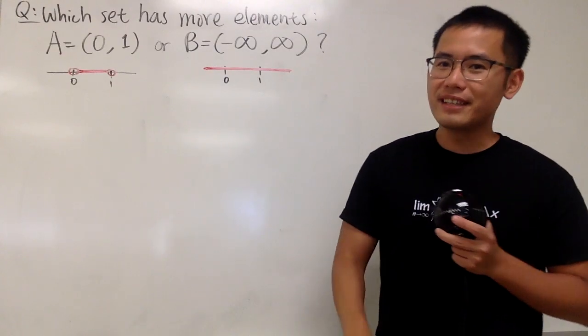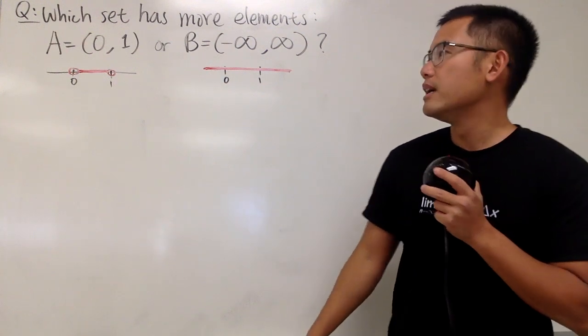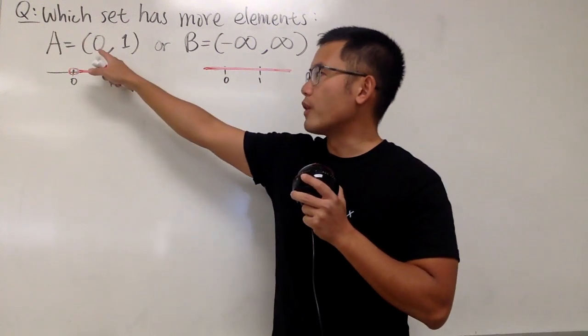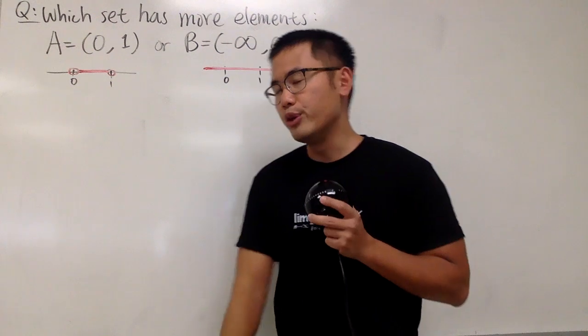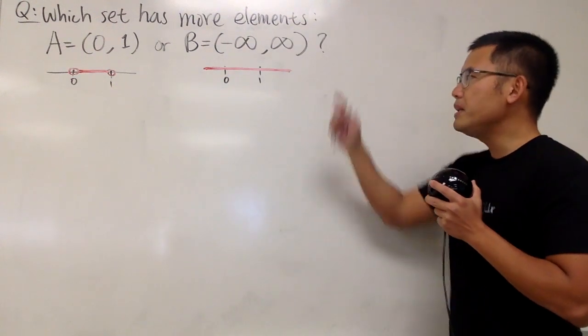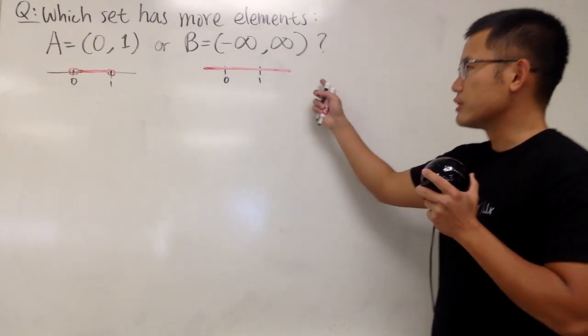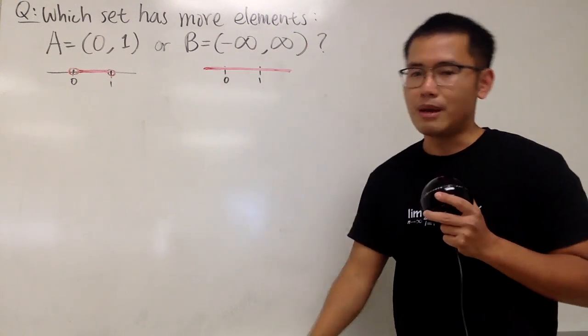Okay, let's do some math for fun. Here's another question for you guys. We are going to see which set has more elements. Set A is the interval going from 0 to 1, all the real numbers right here, and we do not include the endpoints. And set B is the interval going from negative infinity to positive infinity, and that's just the whole real number line.